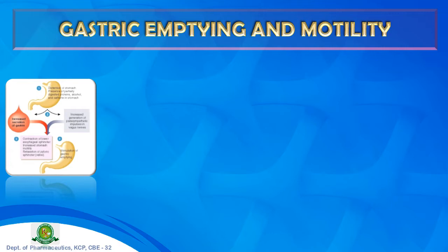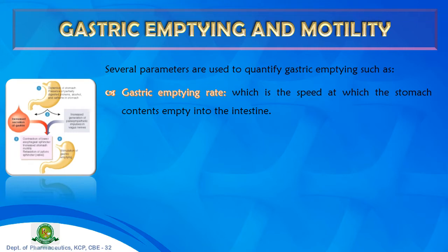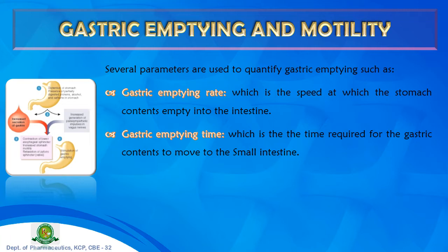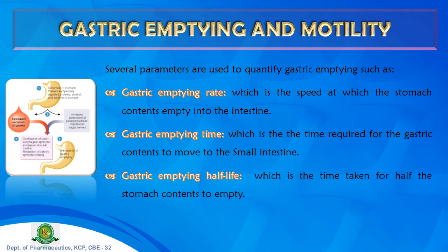Gastric emptying follows a first-order process and is quantified by three parameters: gastric emptying rate (the speed at which stomach content empties into the intestine); gastric emptying time (the time required for gastric content to move to the small intestine); and gastric emptying half-life (the time taken for half of the stomach content to empty). In vivo, gastric emptying is studied using radio-opaque contrast material such as barium sulfate or radioisotope tagging with regular scanning.